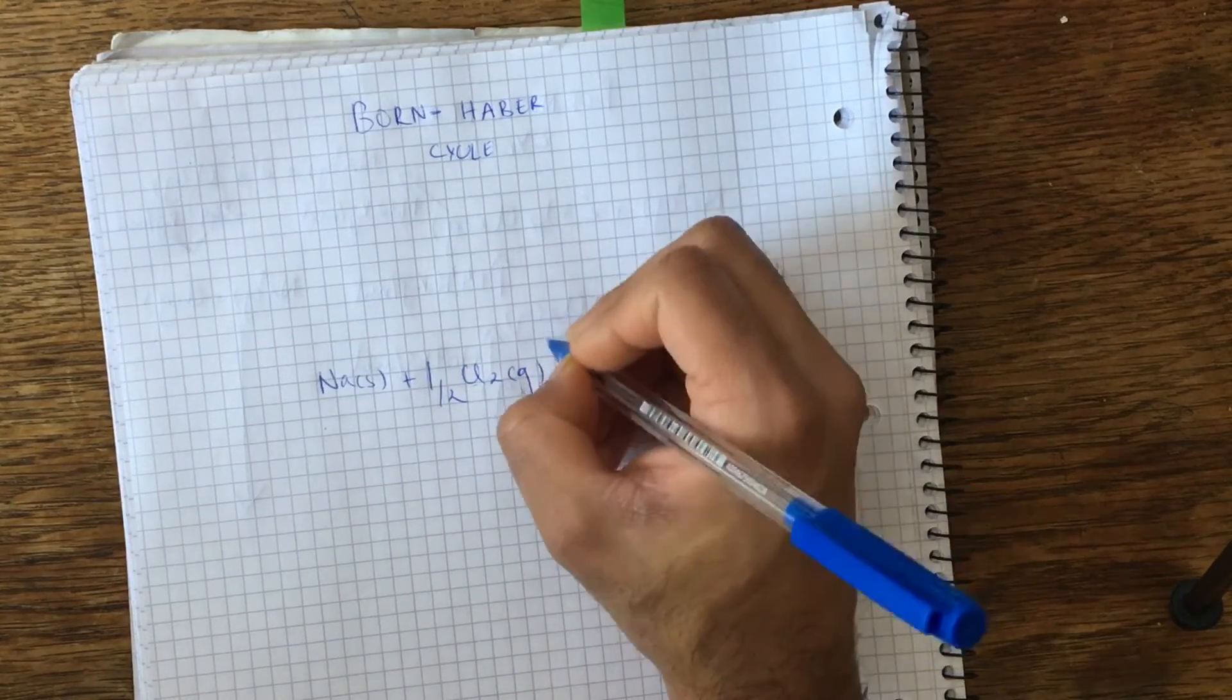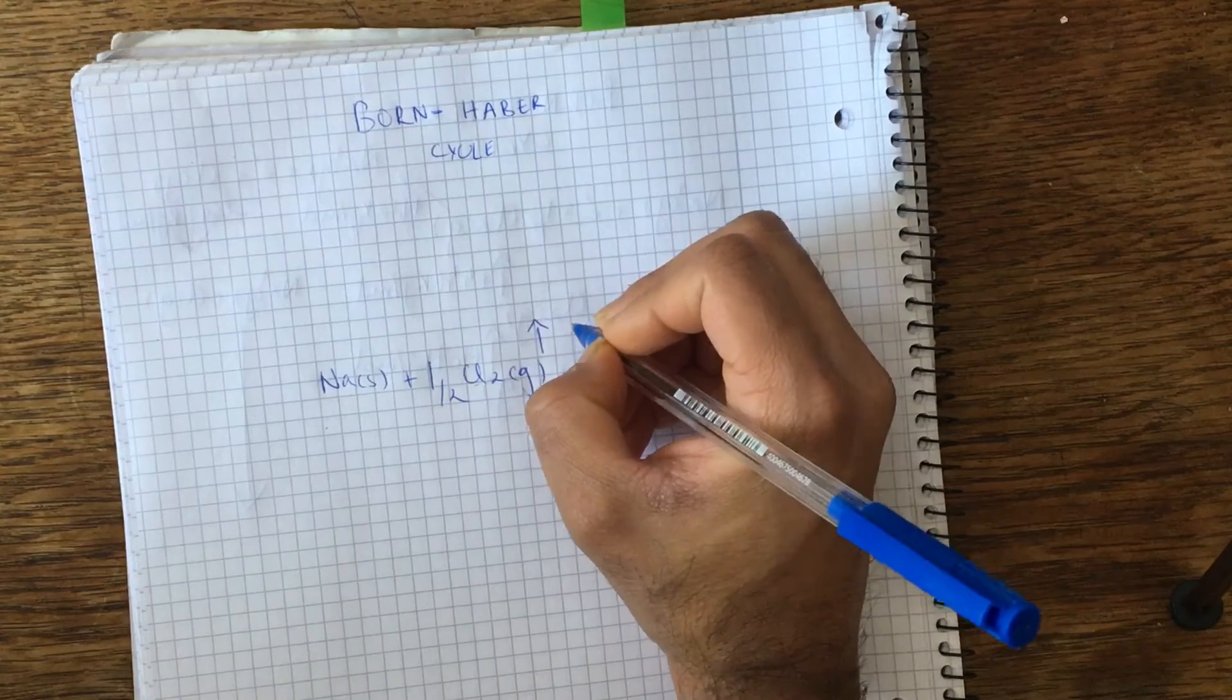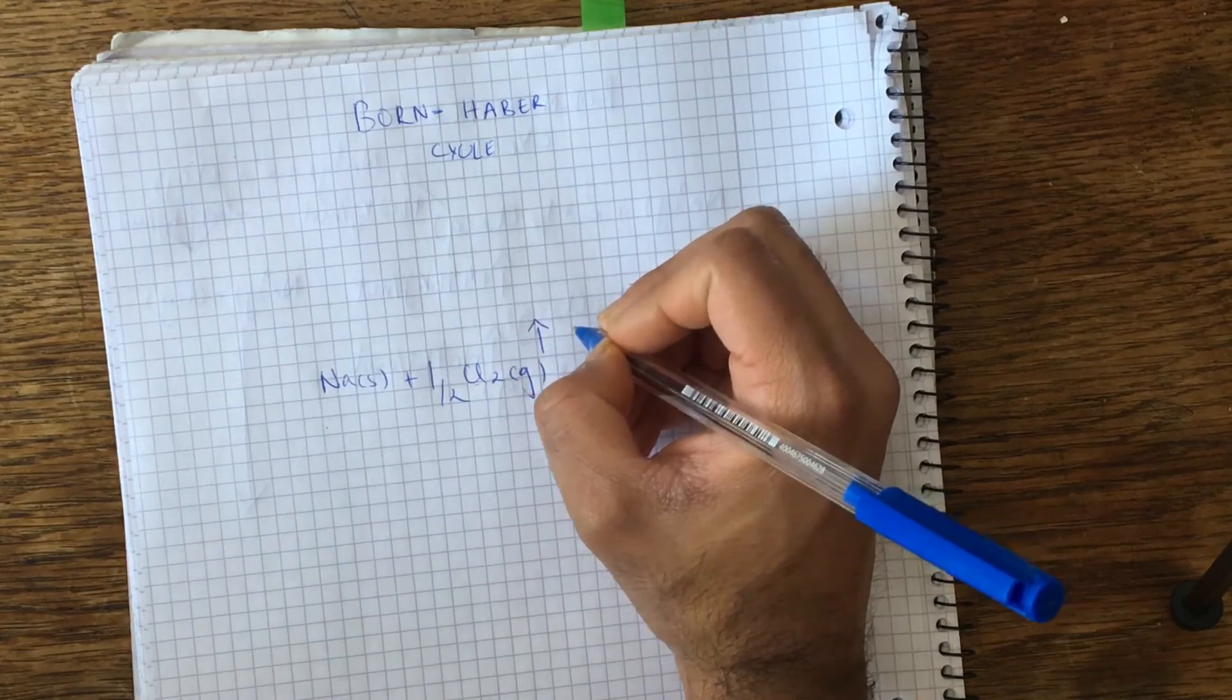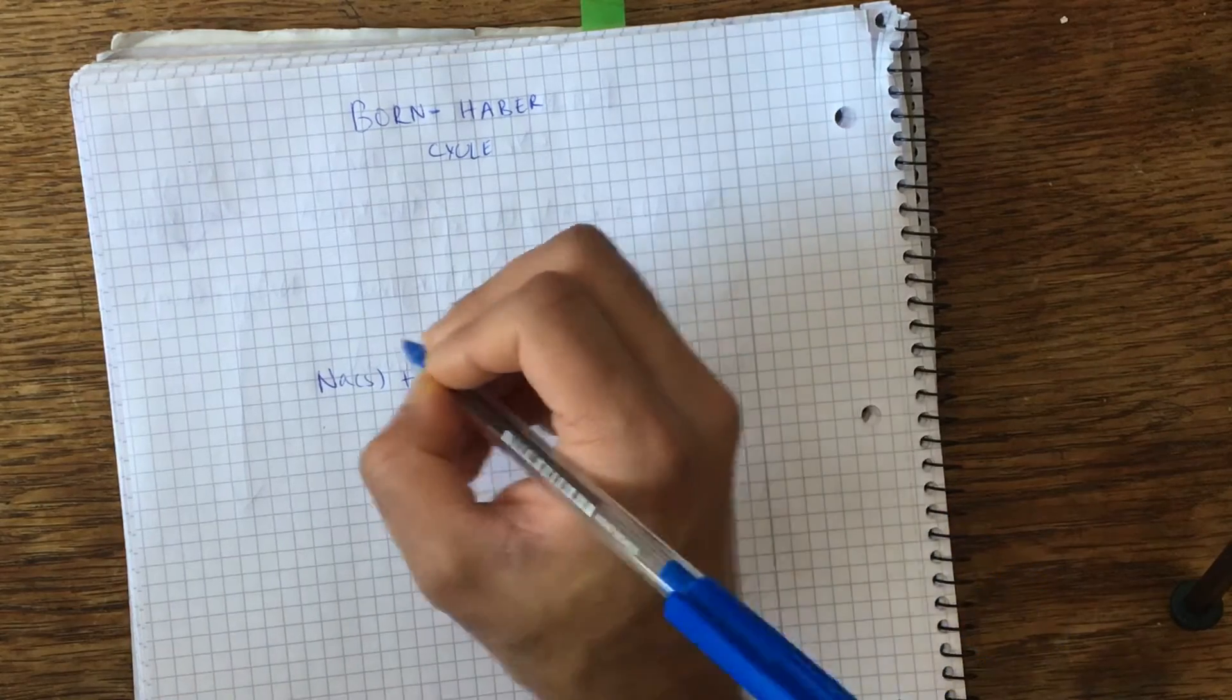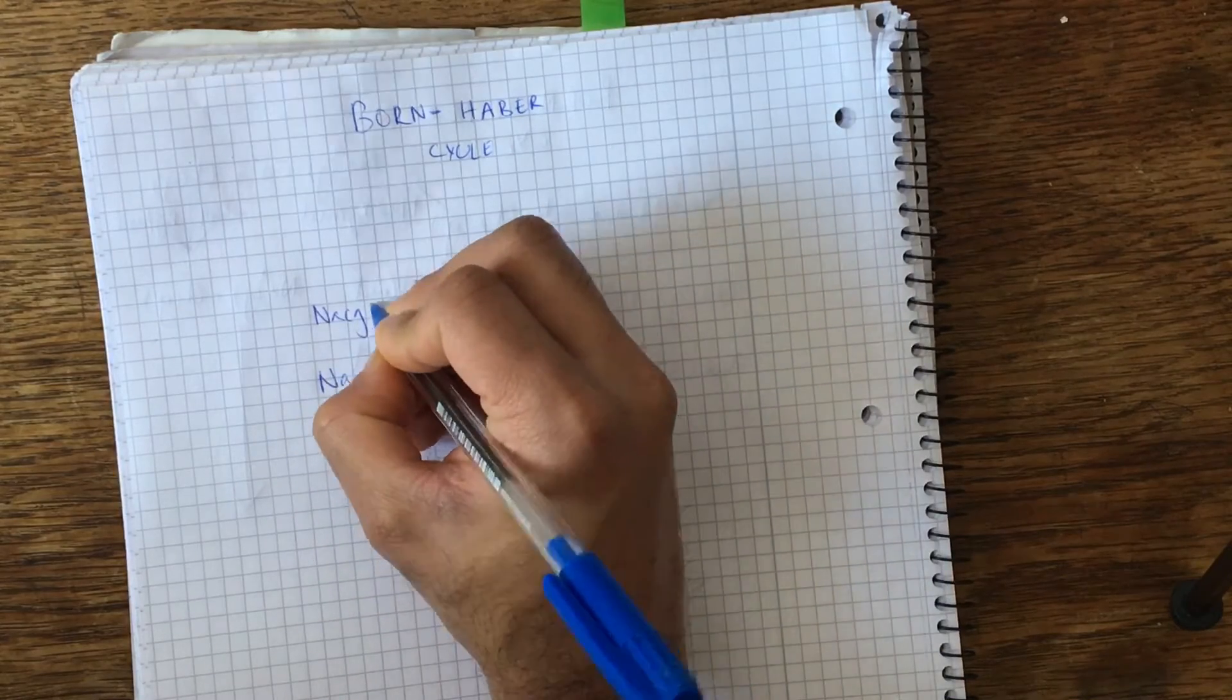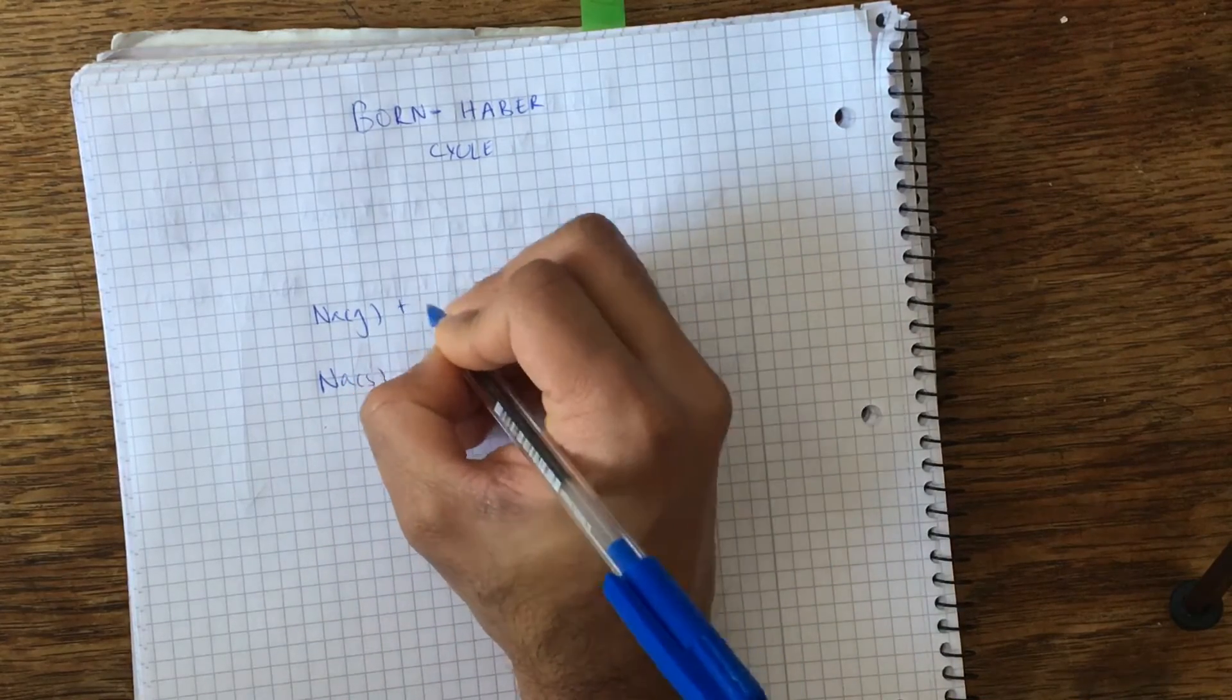So basically, we need to convert both of them to their respective gaseous ionic states in order for them to react, and we're going to start off with sodium. Before we do get the sodium ion, it has to be converted into a gas.